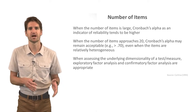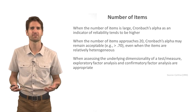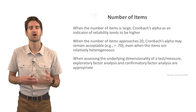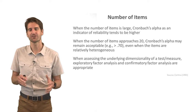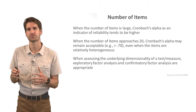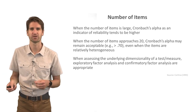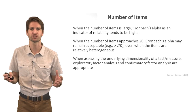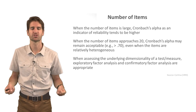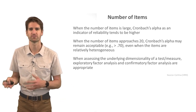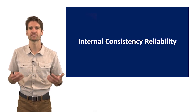When your goal is to assess the underlying dimensionality of a test or measure with multiple items, exploratory factor analysis and/or confirmatory factor analysis are most appropriate. Cronbach's Alpha doesn't necessarily tell you that there's just one dimension — though a high alpha can be an indicator of that. If you're really interested in whether multiple dimensions underlie your items, that's where factor analysis, whether exploratory or confirmatory, comes in. That wraps up the lecture on internal consistency reliability.